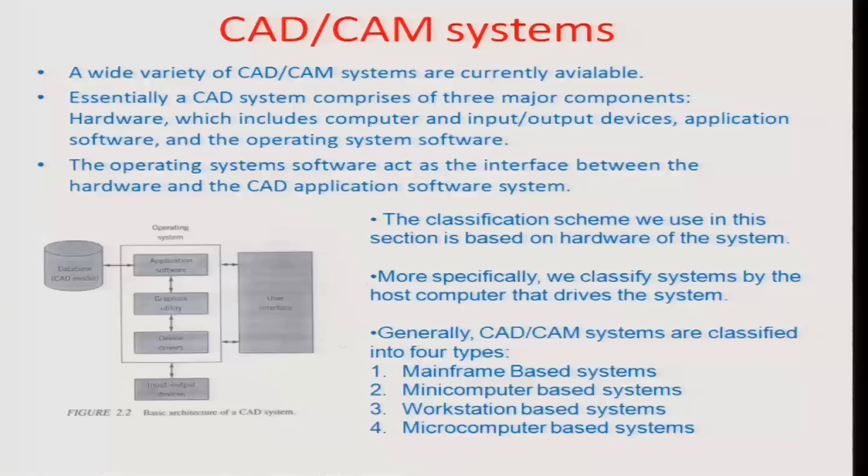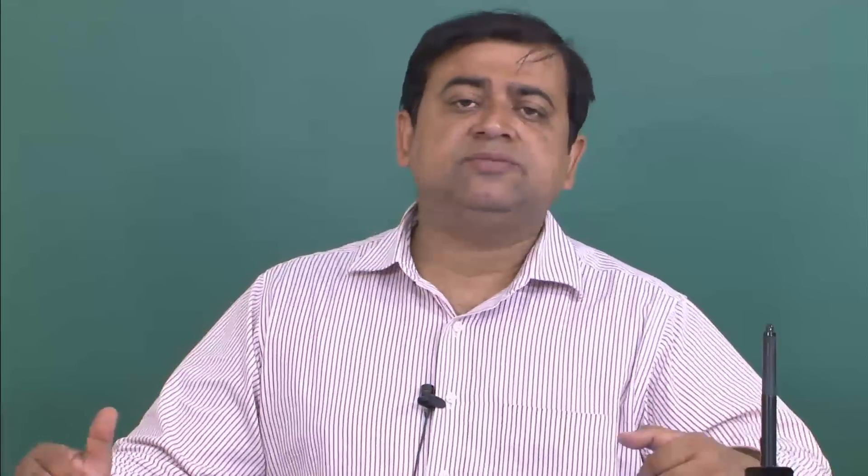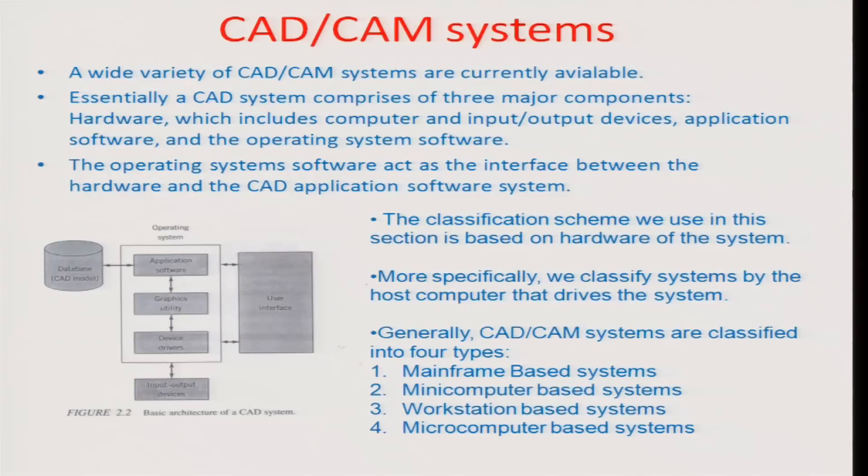Ever since then, a variety of CAD/CAM systems have evolved. Currently there are a wide variety of such systems. If you look at really what are the different components of such CAD systems, the three major components are the hardware which does the computation, the back end computation behind the visual display. And it includes computer input output devices and application softwares and operating system softwares. These are the major components of any computer aided design system.